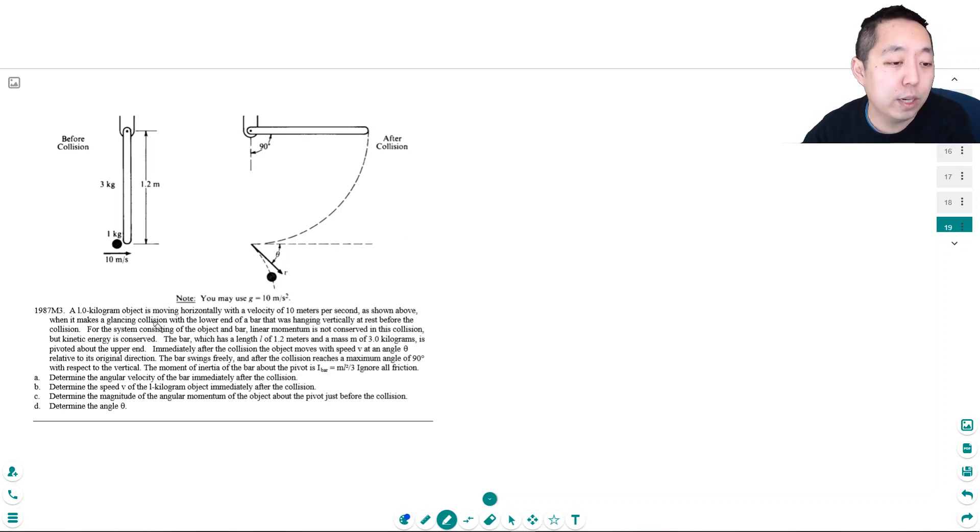So I have a one kilogram object moving horizontally with velocity 10 meters per second as shown above when it makes a glancing collision with the lower end of the bar that was hanging vertically at rest before the collision. For the system consisting of the object and bar, linear momentum is not conserved in this collision but kinetic energy is conserved.